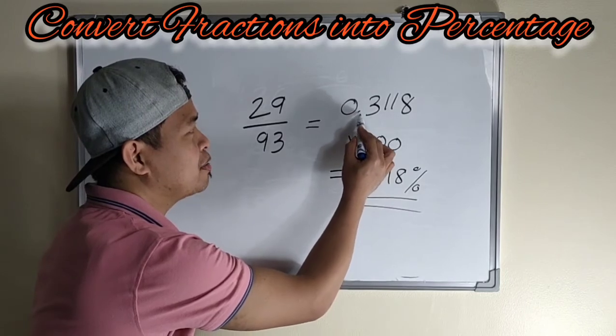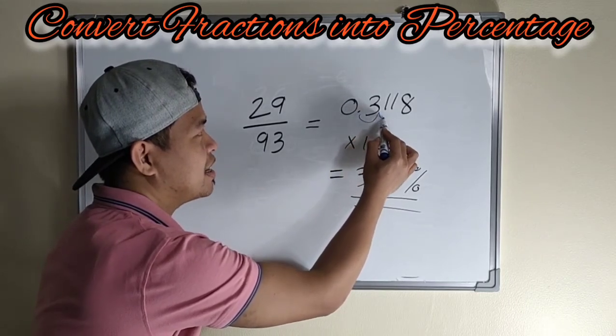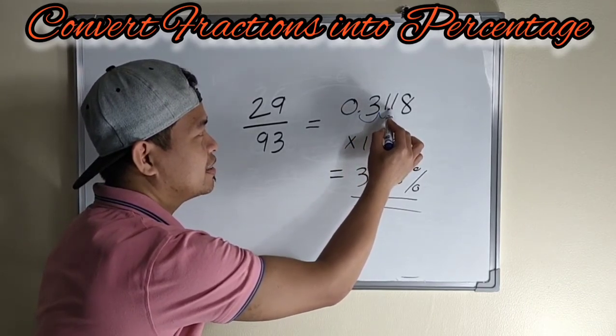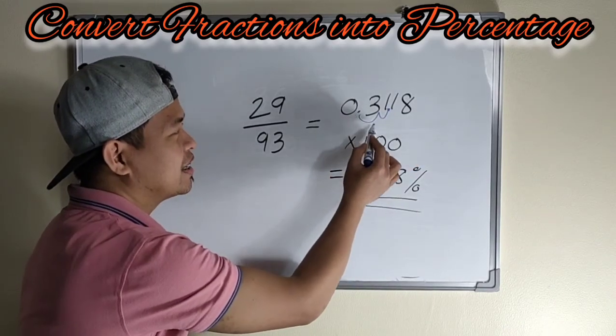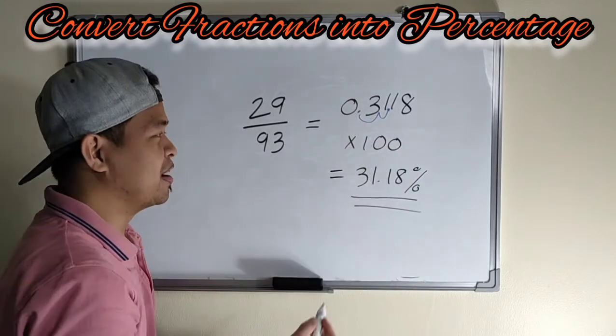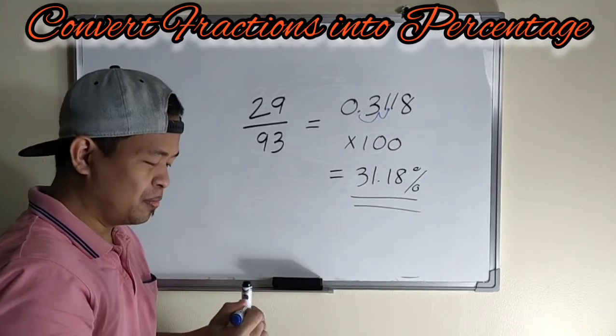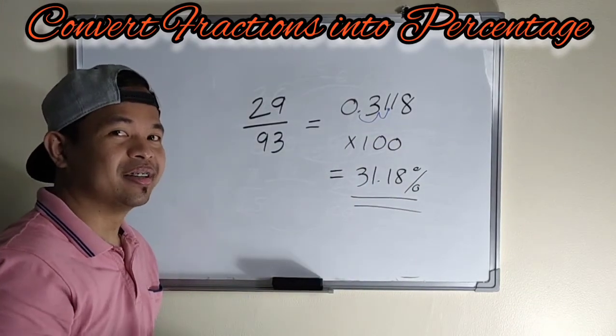So 31.18. From here, we will just adjust, jump the decimal. So times 100, adjust lang natin yung decimal. So we have 31.18%. So nakukuha nyo po ba?